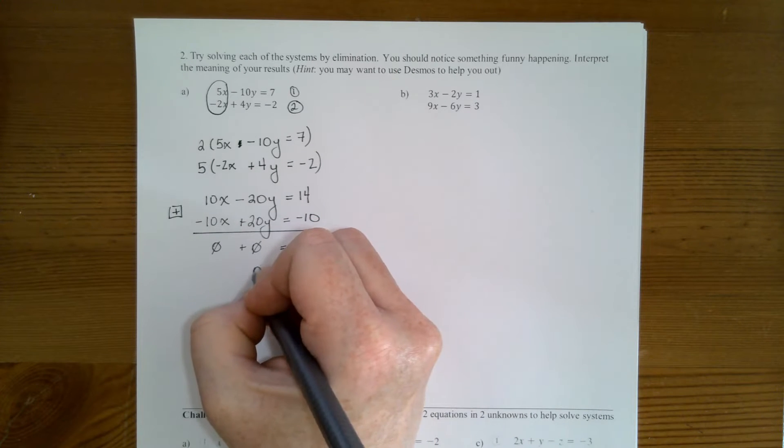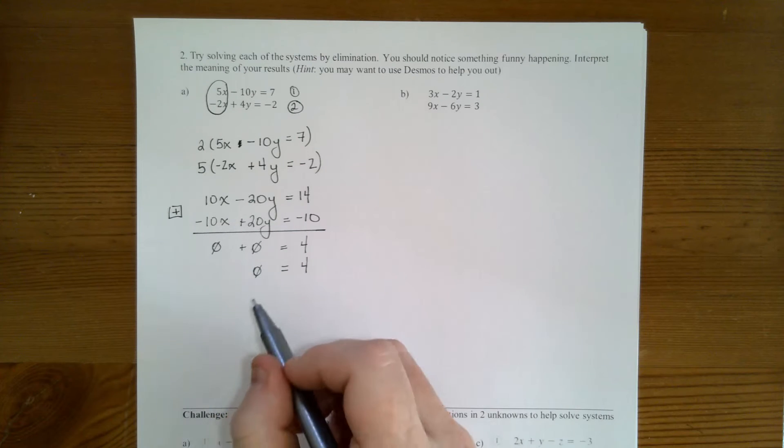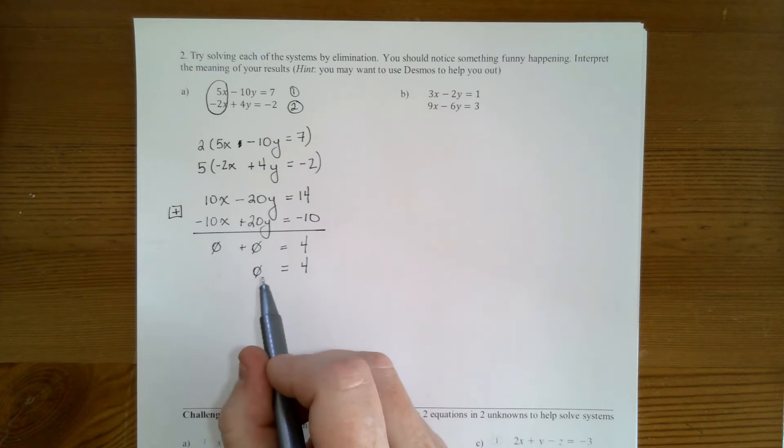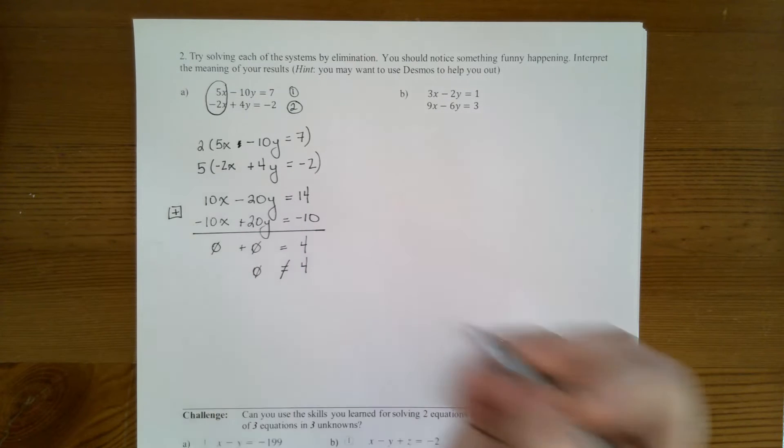Well, nothing plus nothing is still nothing. And nothing equals 4. There's no way these two things are the same. If I have 0 of something and I have 4 of something, this can't happen.